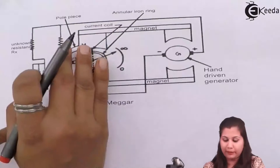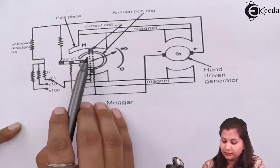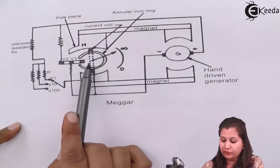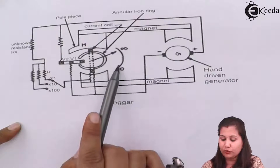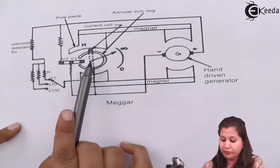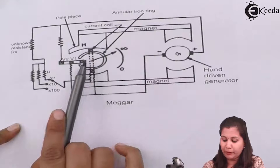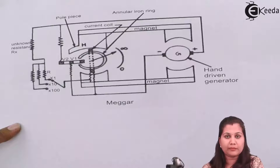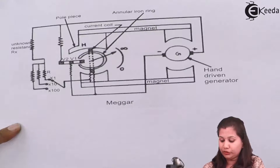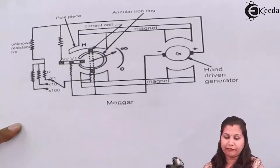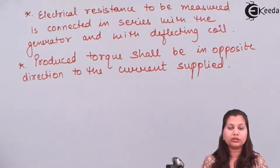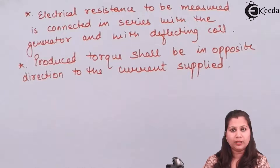The produced torque is in the opposite direction of the current supplied to it. The current coil starts deflecting from its position and due to the movement of this current coil the pointer also moves over the calibrated scale. The movement of this pointer is in proportion to the value of the unknown resistance, because if the resistance is very high then the current flowing in the circuit will be small, torque will be small, and due to that torque the movement of the pointer will be affected.